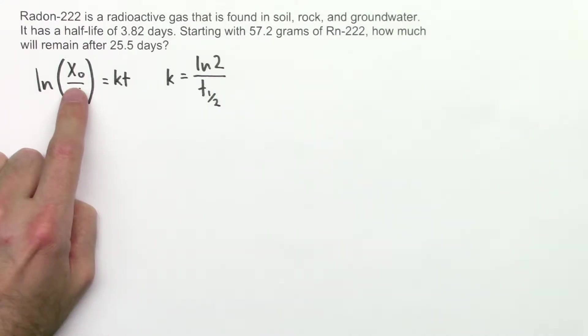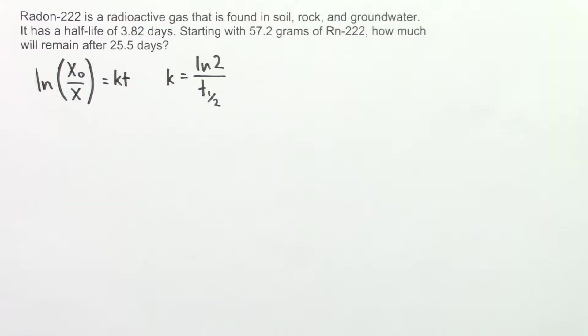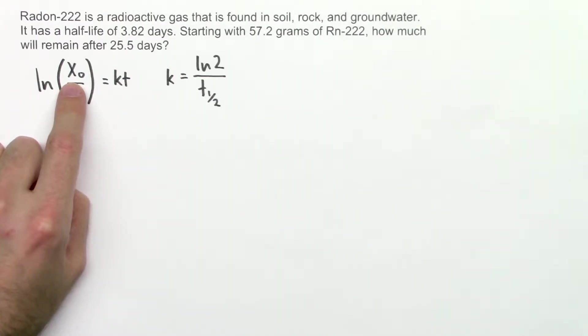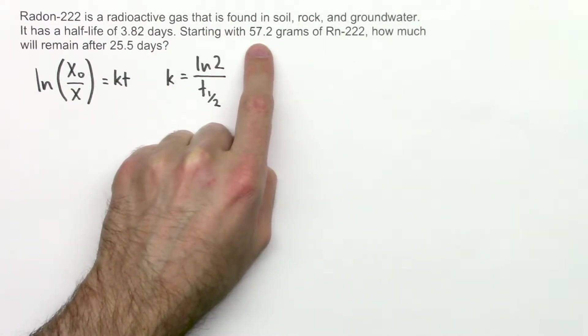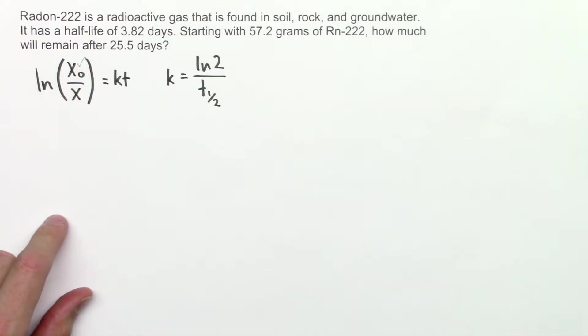So then we have x0 or x sub-zero. This is the amount of the substance that we're starting with. Is this a variable that we know, or do we have to figure it out? Well, it tells us right here how much we're starting with. So this is a variable that we know.